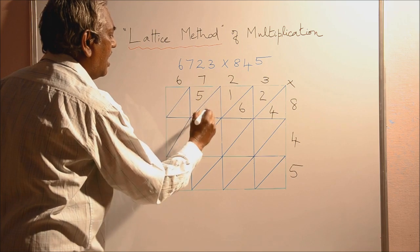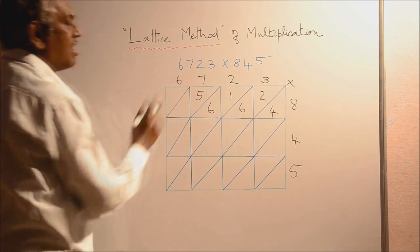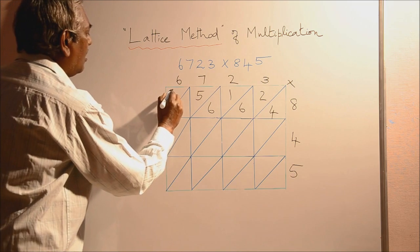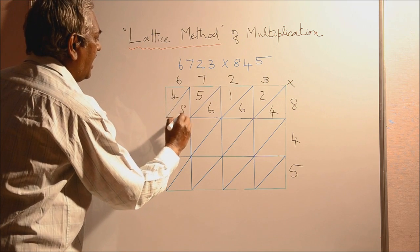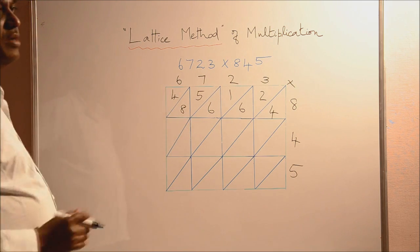5 here and write 6 here. 8, 6 are 48. Write 4 here and 8 here. Now the first row is completed.